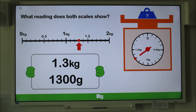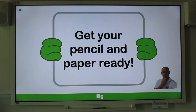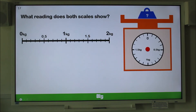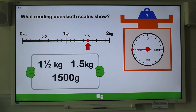I bet you want to have another go. Are you ready? This one's easy. What reading does both scales show? Pause the video and write down your answer. That's right — 1.5 kilograms or 1,500 grams. Well done.